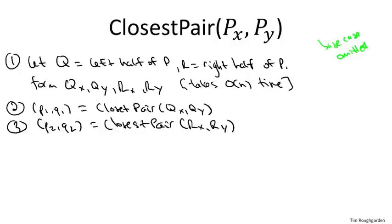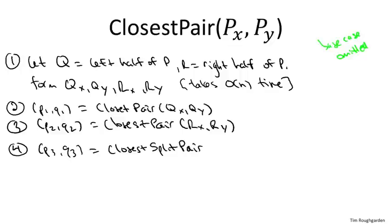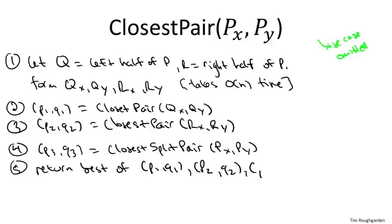Just like in counting inversions, we need a special-purpose subroutine that computes the closest pair for the case where it is split — one point in Q and one in R. I'll write down that subroutine and leave it unimplemented for now. If we have a correct implementation of closest split pair that takes the original point set sorted by x and y and returns the smallest split pair, then we're done. The closest pair must be either on the left, on the right, or split — steps two through four compute the closest pair in each category, and we return the best.